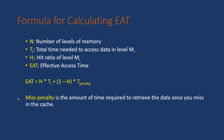Here is the formula for calculating effective access time. N means number of levels of memory — L1, L2, etc. Ti is the total time needed to access data at level i. Hi is the hit ratio of level i. EAT equals the hit ratio multiplied by that level's access time, plus one minus the hit ratio multiplied by the miss penalty. The miss penalty is the amount of time required to retrieve data once you miss in the cache — whatever you missed at one level, the time to find it in the rest of the memory is the miss penalty.